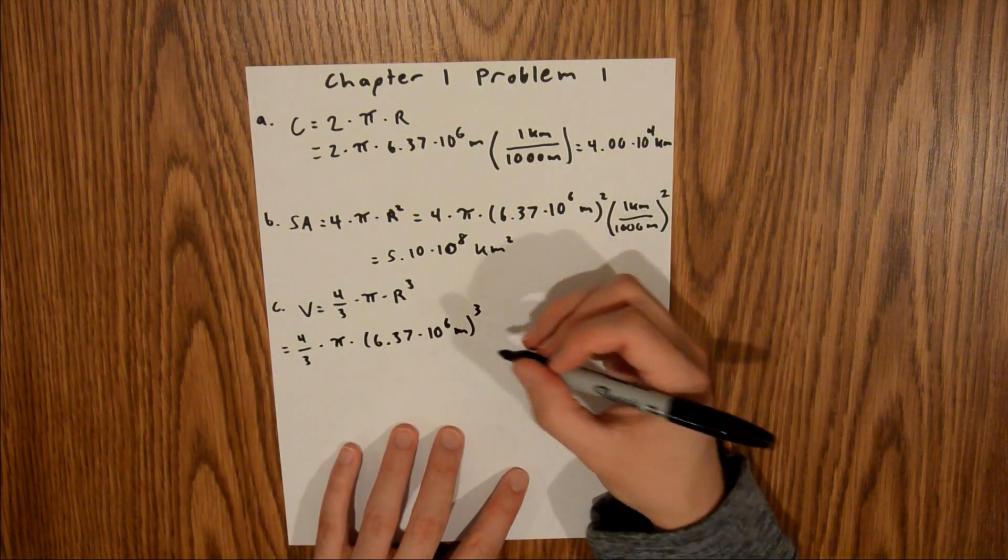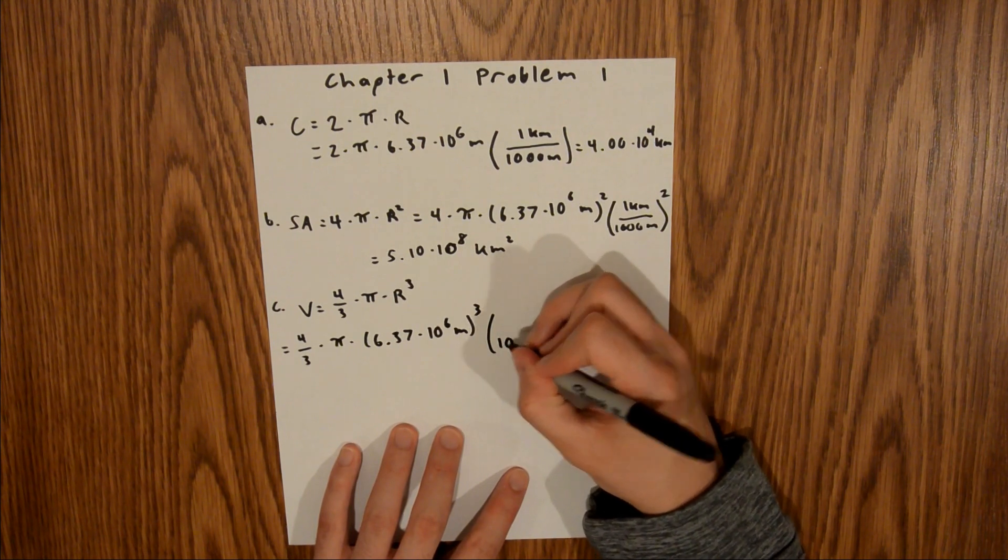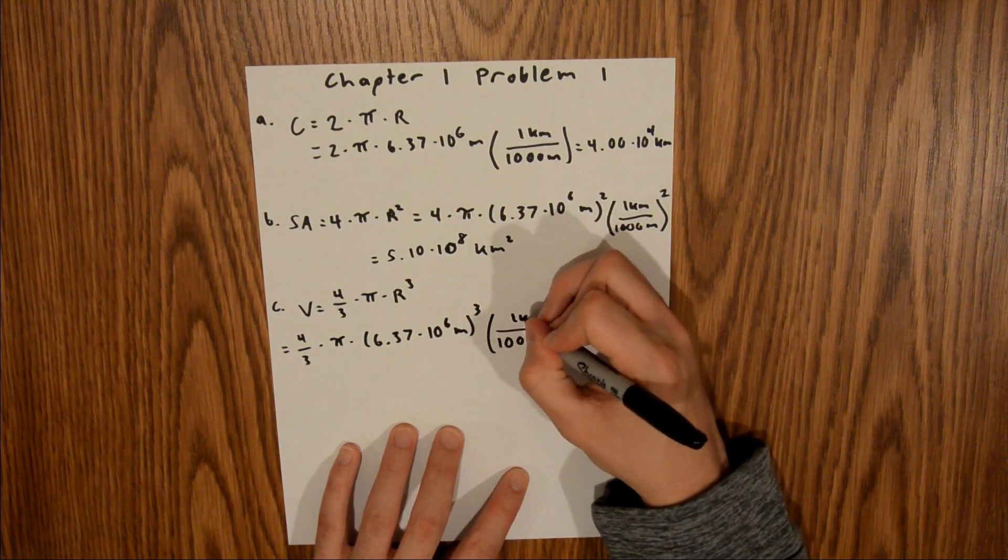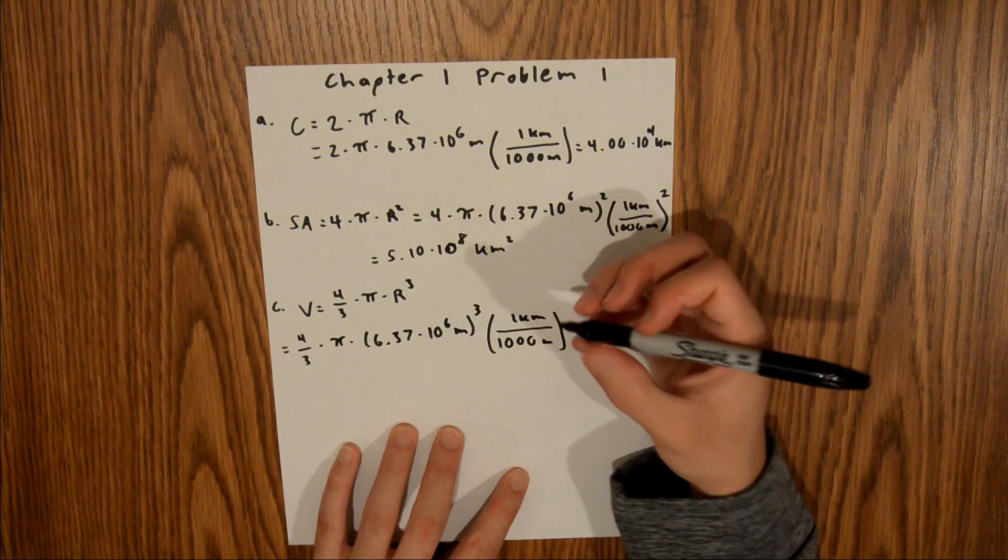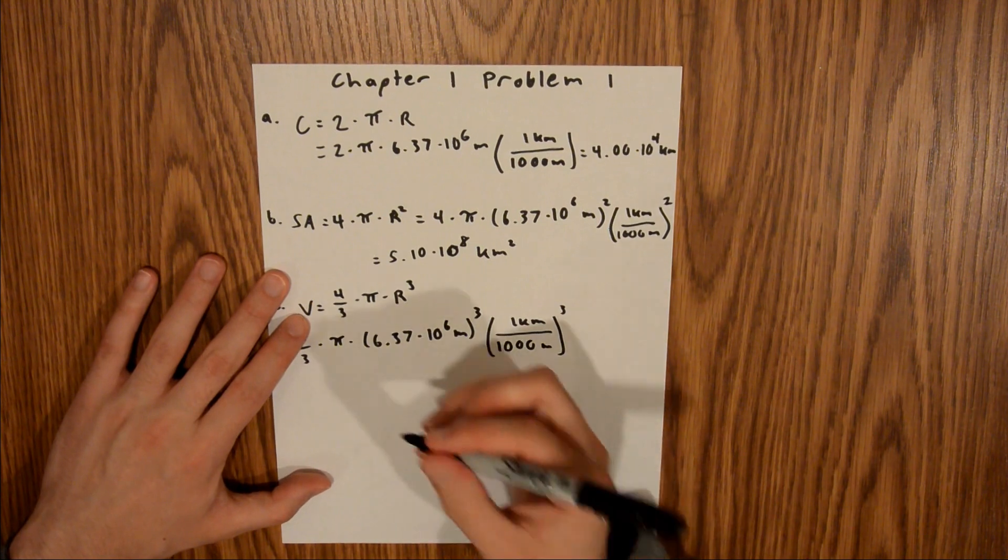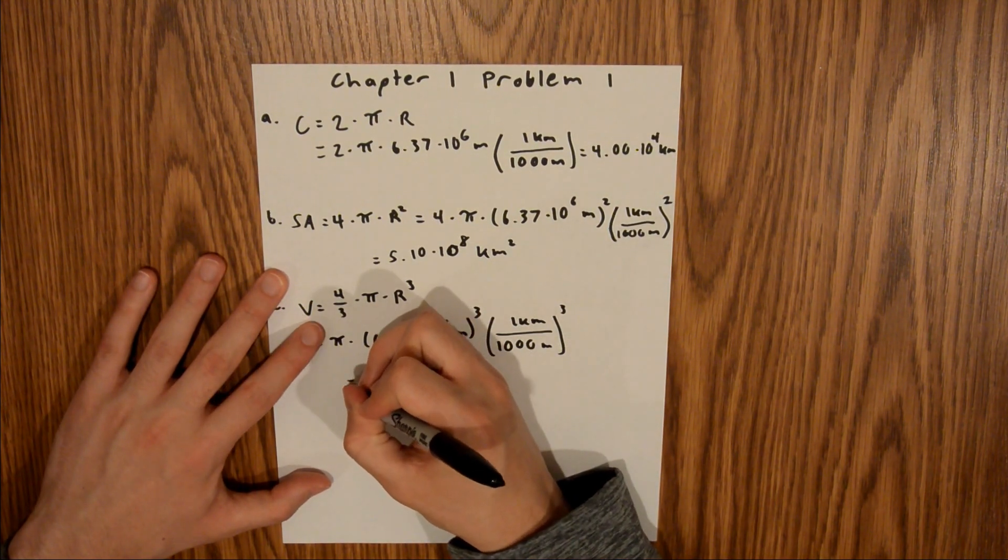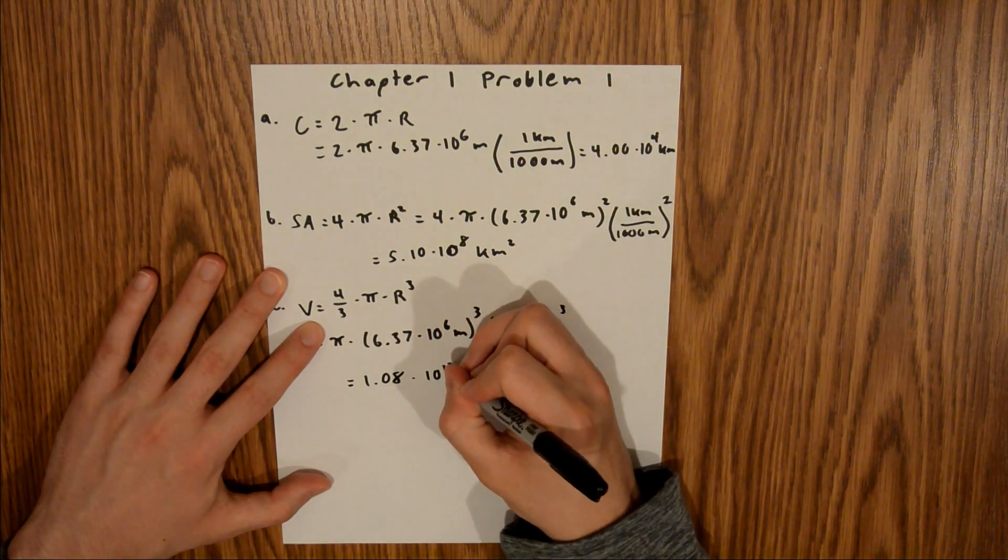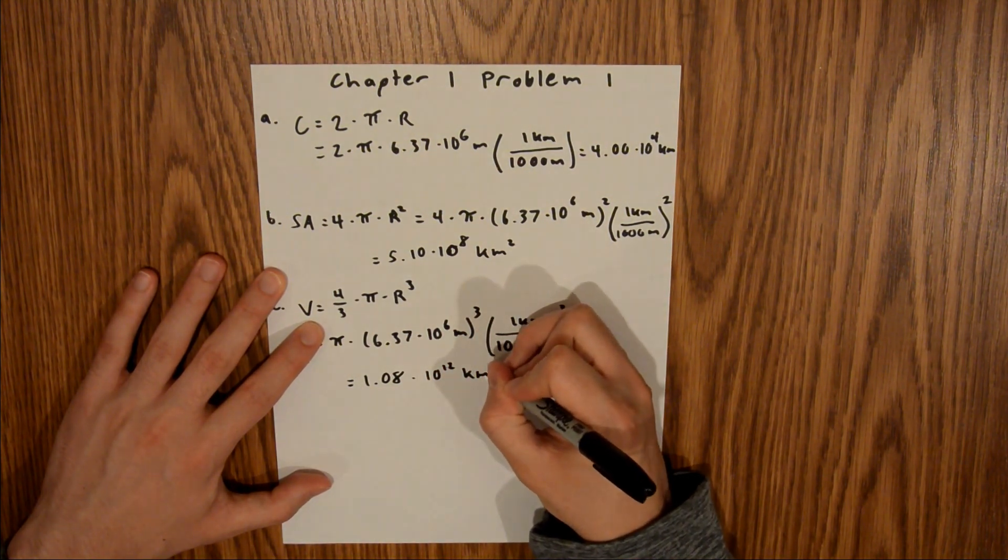And again, we're going to do a unit conversion, same one as the last two parts, 1,000 meters in 1 kilometer. And in order for the units to work out, we need to cube this. And so then if you plug that into your calculator, you'll find that the volume is equal to 1.08 times 10 to the 12th kilometers cubed.